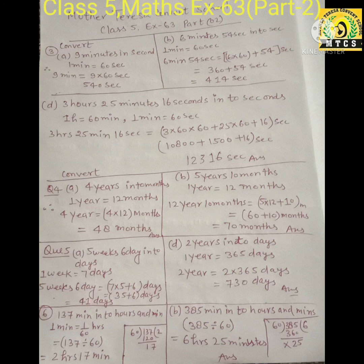3 hours, 25 minutes, and 16 seconds into seconds. As you know, 1 hour is equal to 60 minutes and 1 minute is equal to 60 seconds. Firstly you have to change 3 hours into seconds.